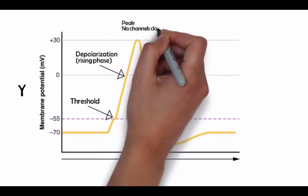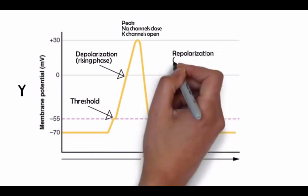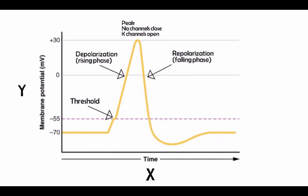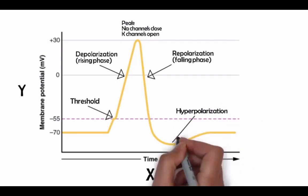Eventually the action potential reaches its peak. Sodium channels close and potassium channels open, which allows potassium to flow out of the cell. This loss of positive potassium ions promotes repolarization, which is known as the falling phase of the action potential. The neuron returns to resting membrane potential, but actually overshoots it, and the cell becomes hyperpolarized.